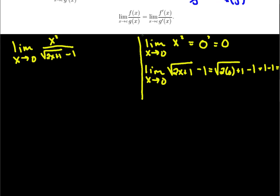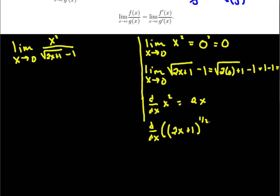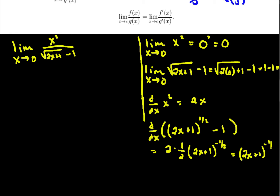What's the derivative of the top and what's the derivative of the bottom? The derivative of x squared is 2x. The derivative of the square root of 2x plus 1 — written as (2x+1) to the 1/2 minus 1 — uses the chain rule. The derivative of the inside is 2, times 1/2 times (2x+1) to the minus 1/2, which simplifies to (2x+1) to the minus 1/2. So that's the derivative of the bottom. Using L'Hôpital's rule — and I will write L'H to indicate this —